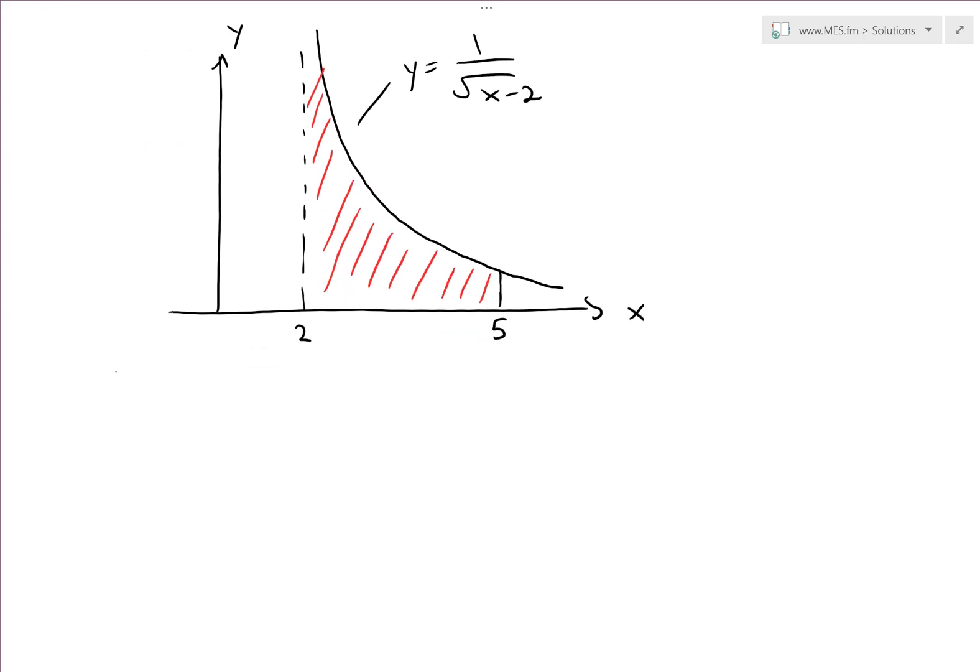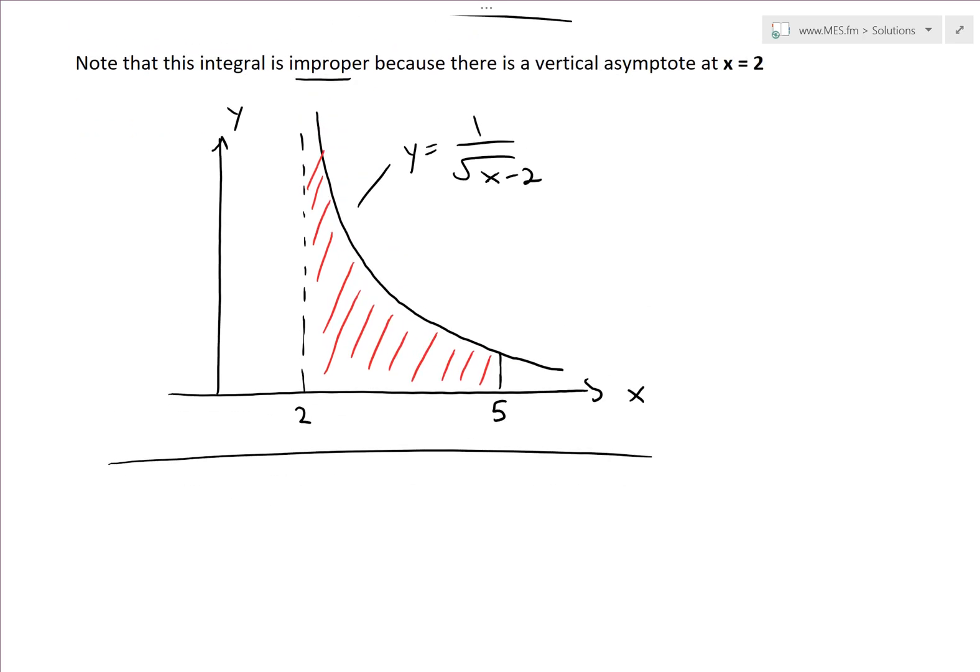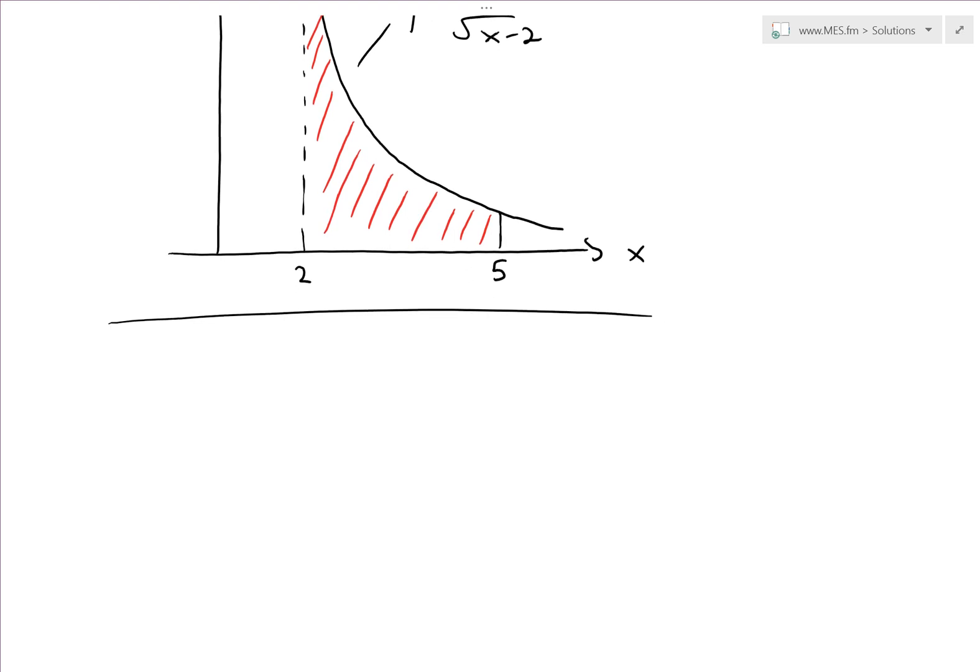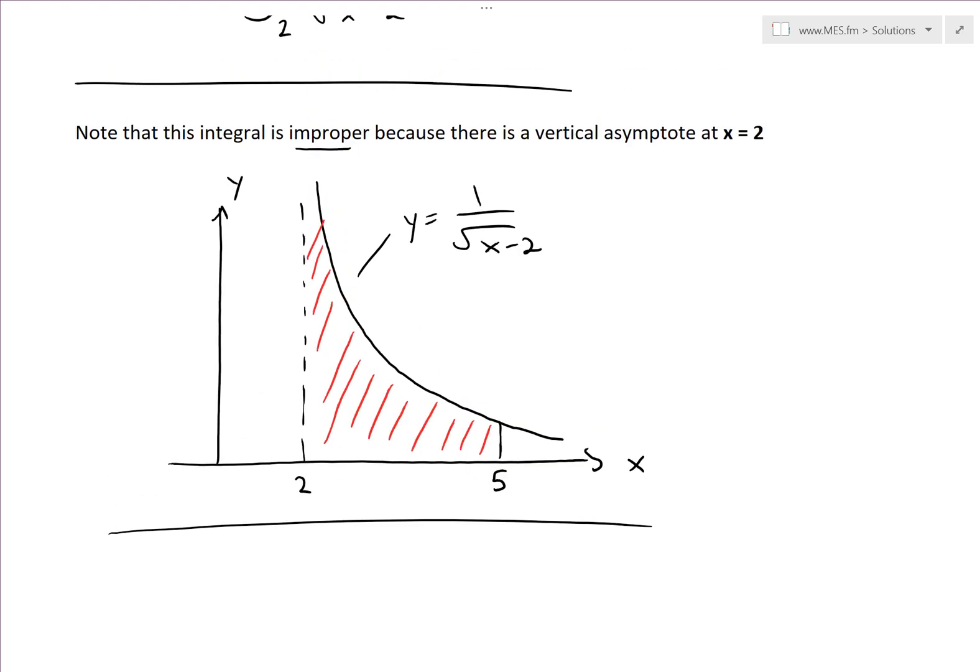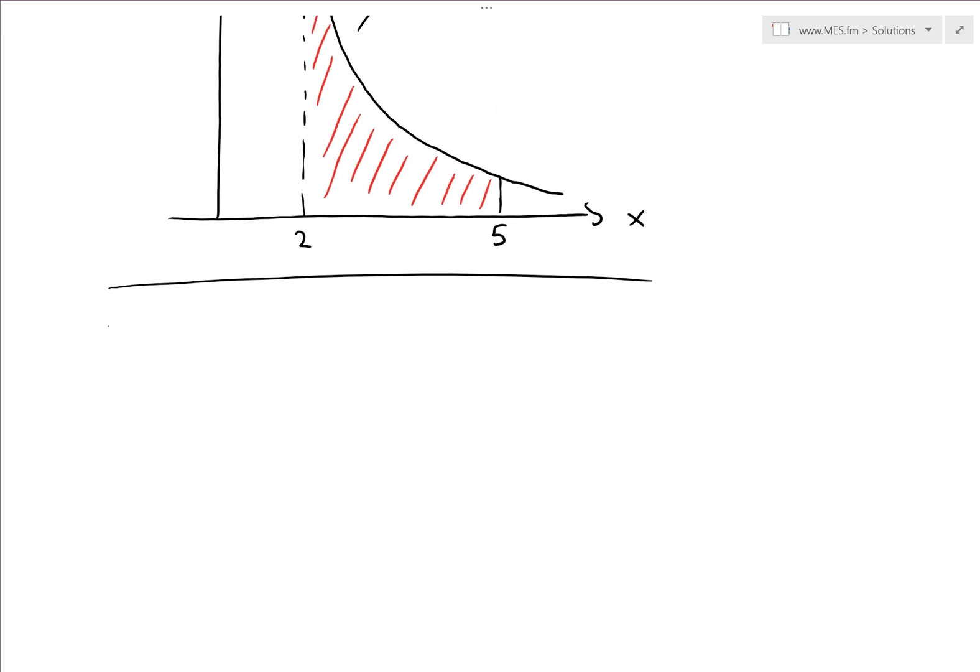Recall from my earlier video on the definition of type 2 integrals, we can write this integral in such a way that we don't need to deal with the vertical asymptote and write it as a limit. The integral from 2 to 5 of 1 over square root x minus 2 dx equals limit as t approaches 2 from the right side.